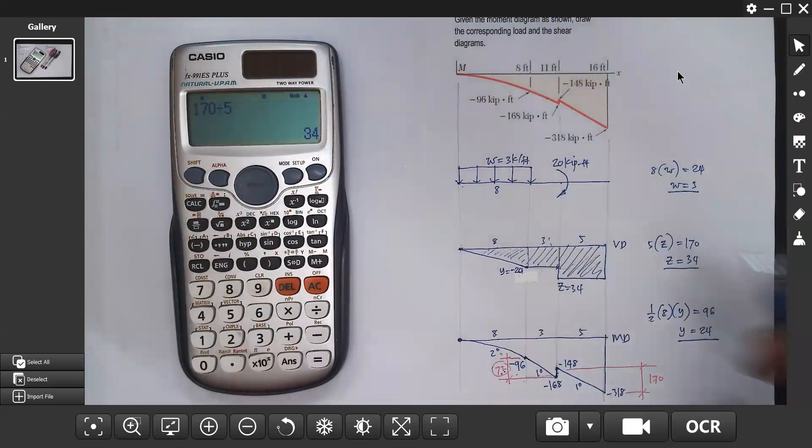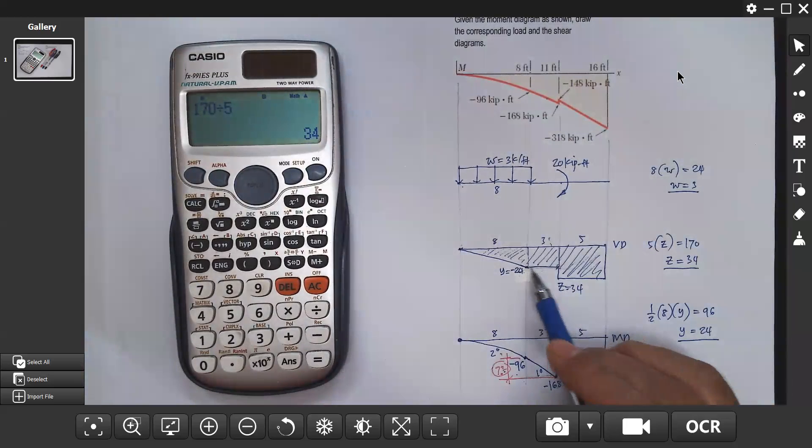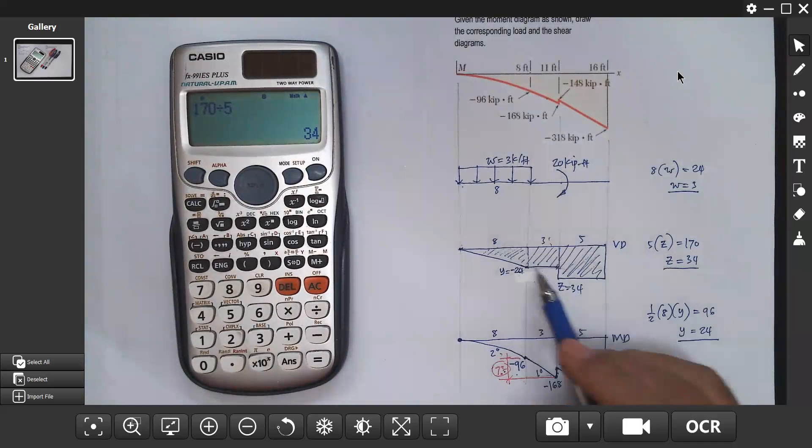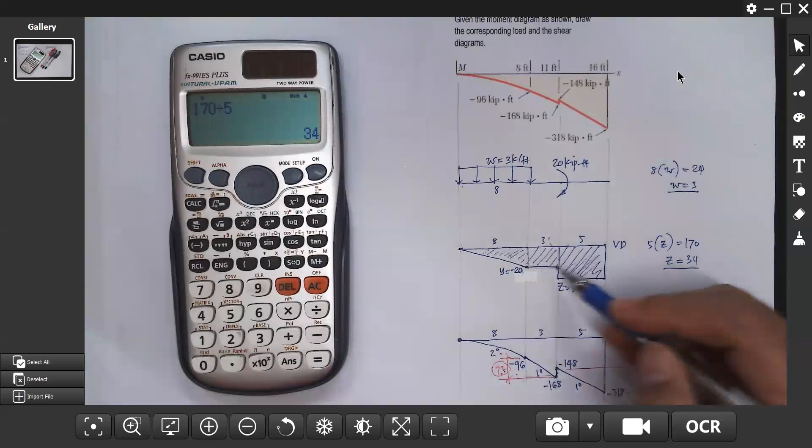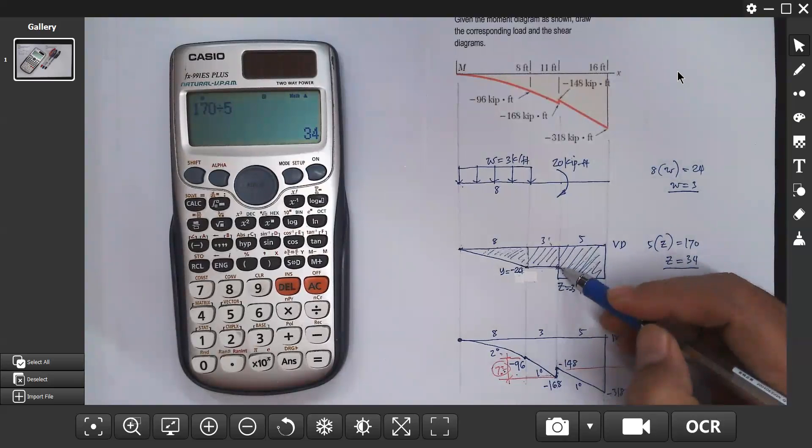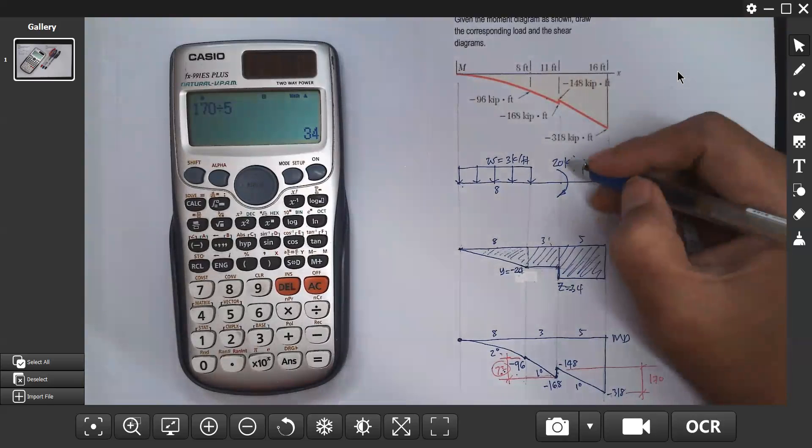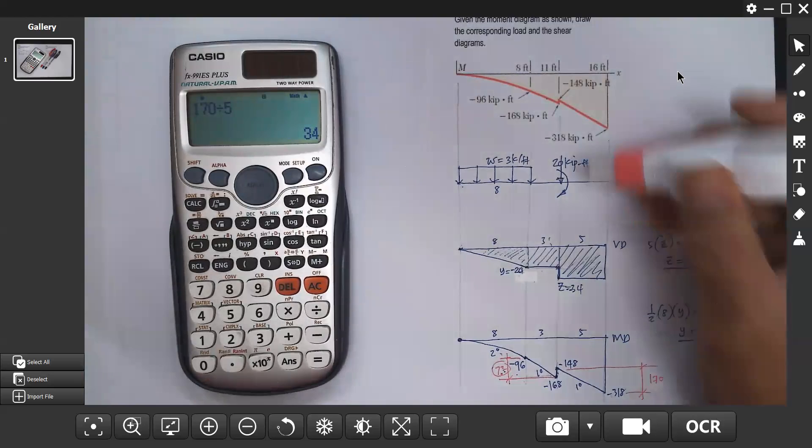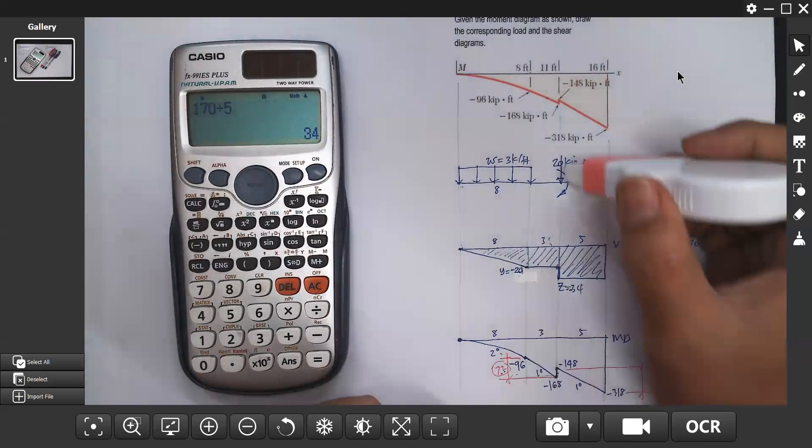Next, horizontal shear means no load in the load diagram. Then from negative 24 it dropped to negative 34, so it dropped by 10. This means there's a concentrated load of 10 kips.